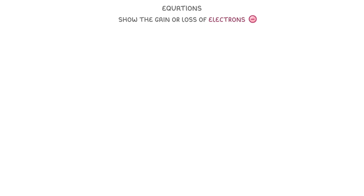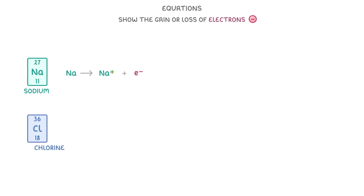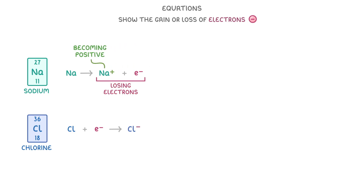Just like we can write chemical equations between different atoms, we can also write equations to show the gain or loss of electrons. For example, in the case of sodium, we could write that a sodium atom goes to form a sodium ion plus an electron. Or for chlorine, we could write that chlorine plus an electron forms a 1- chloride ion. So if the atom is becoming a positive ion and losing electrons, we place the electron on the right of the reaction, while if the atom is gaining electrons, we place the electron on the left to show that it's combining with the atom.